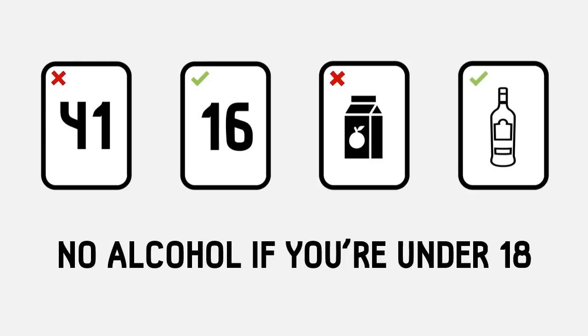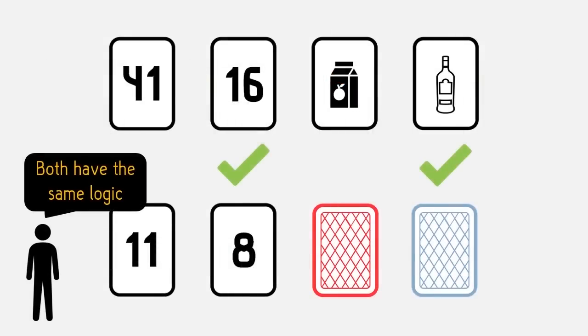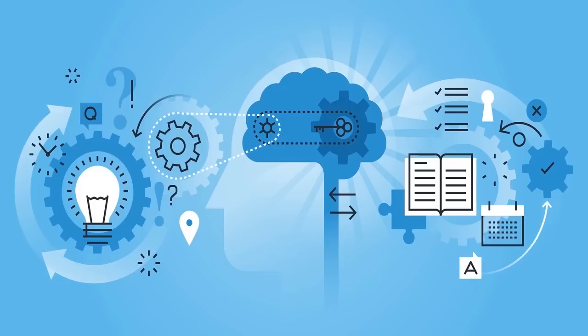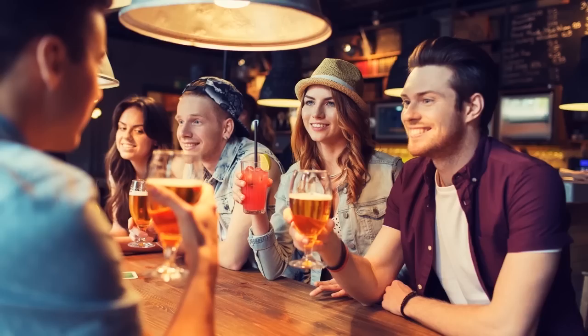People tend to be better at this version. But why? The logic behind it is the exact same. One theory is that humans didn't evolve to solve logical problems in the cold hard way of the first problem. Instead, we are social creatures, and as such are much better at solving problems in a social context.